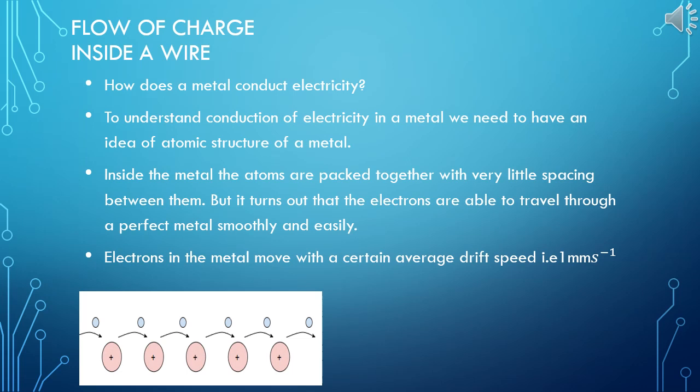Now let us move to another new topic, that is flow of charge inside a wire. You have learned metals are good conductors. Let's understand how does a metal conduct electricity. To understand conduction of electricity in a metal, we need to have an idea about atomic structure of metal. Inside the metal, the atoms are packed together with very little spacing between them. But it turns out that the electrons are able to travel through a perfect metal smoothly and easily.